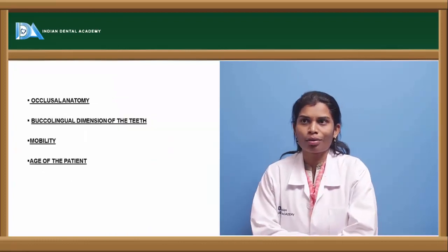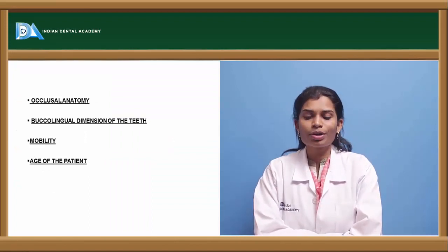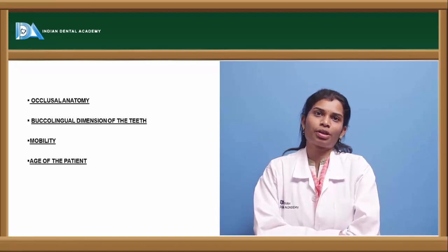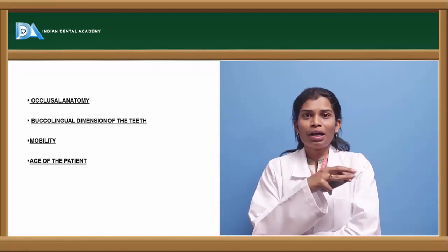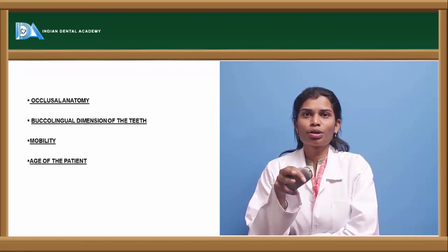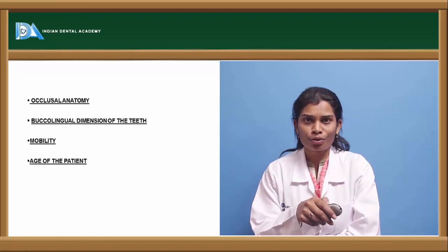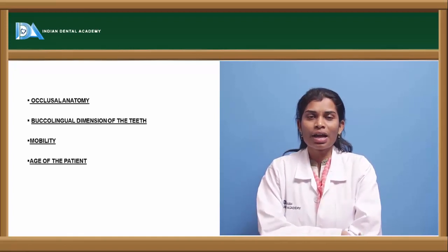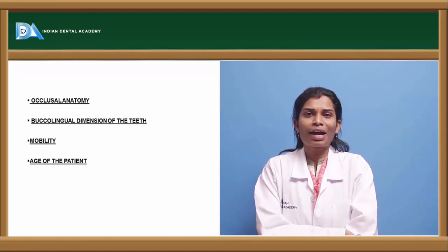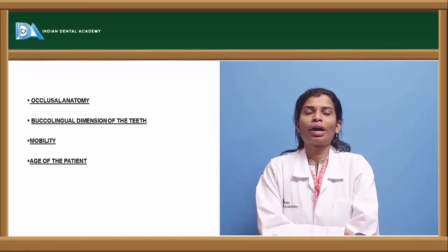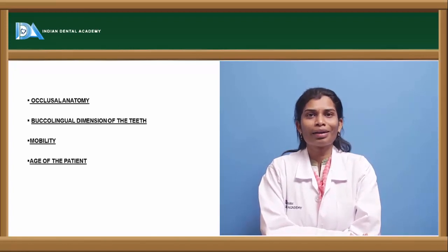Occlusal anatomy is also important in abutment selection. The occlusal curvatures, depressions, grooves, and ridges determine shearing capacity and masticatory efficiency. Better curvatures, ridges, and grooves mean better shearing capacity. In the case of flat occlusal anatomy, more chewing cycles and greater force are needed to achieve sufficient food grinding.